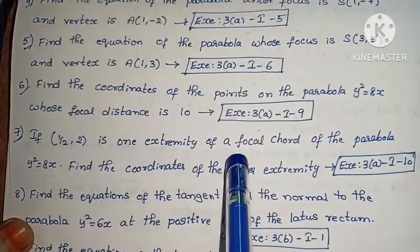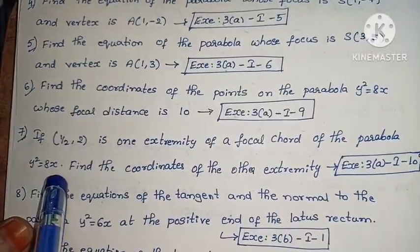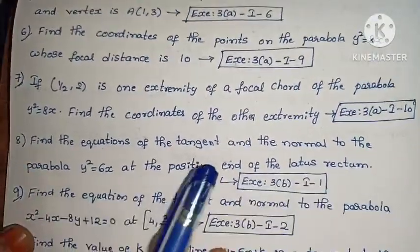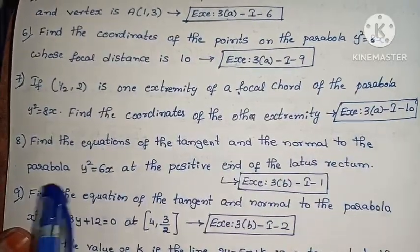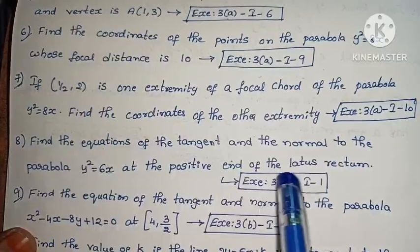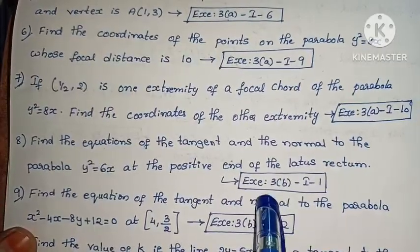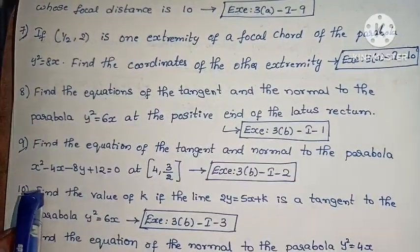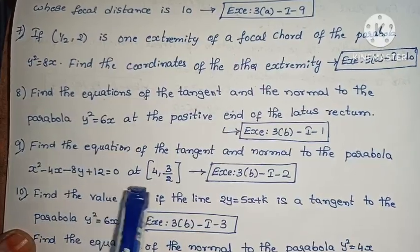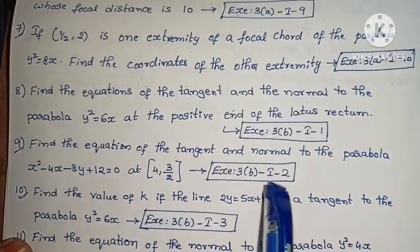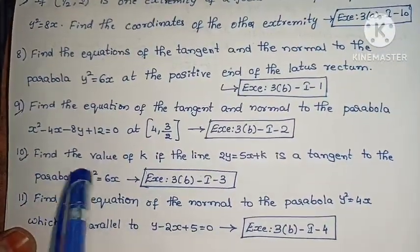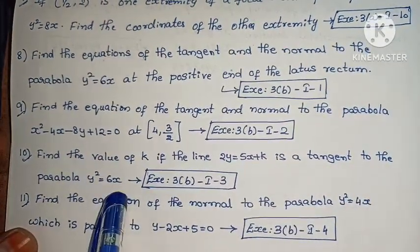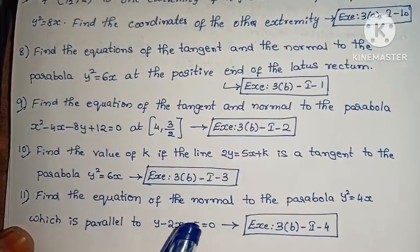Next, find the equation of the tangent and normal to the Parabola x² - 4x - 8y + 12 = 0 at the point (4, 3/2). Exercise 3, second part, second problem. Next, find the value of k if the line 2y = 5x + k is a tangent to the Parabola y² = 6x. Exercise 3, second part, third problem.